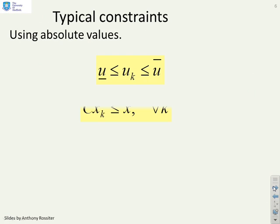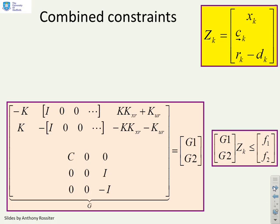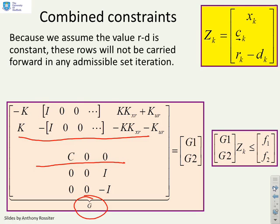What about constraints? So we've got limits on U, limits on X, and limits on this term R-D. So I can also combine these into a single set of inequalities. So I can define this matrix G down here where the top two blocks are basically the input limits. The next block is the state limits, and the block at the bottom is the limits on R-D. Now what you'll notice is I've actually split this system into a G1 and a G2, and we're going to show you why now.